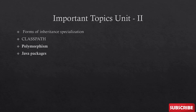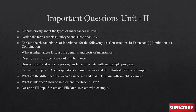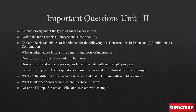Important topics for Unit 2: forms of inheritance, specialization, class path, polymorphism — which is an important topic — and Java packages. Polymorphism and Java packages are especially important here. Important questions include: write briefly about types of inheritance in Java, the super keyword, inheritance and its types, explain types of access specifiers in Java with an example, what is an interface and how to implement an interface in Java, and also file output stream and file input stream.